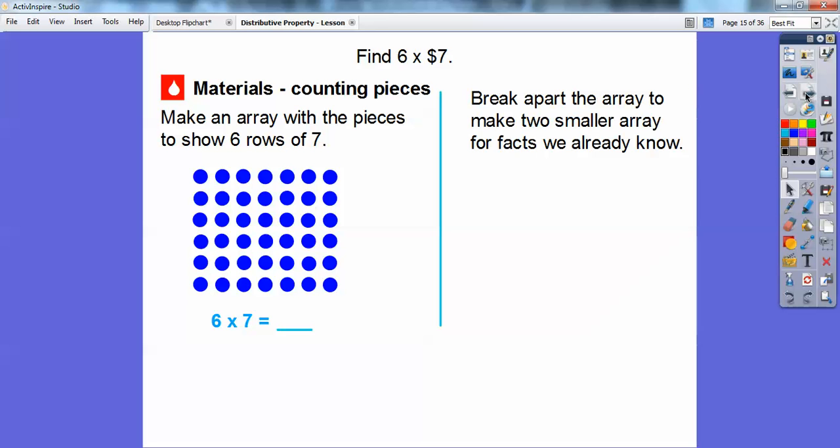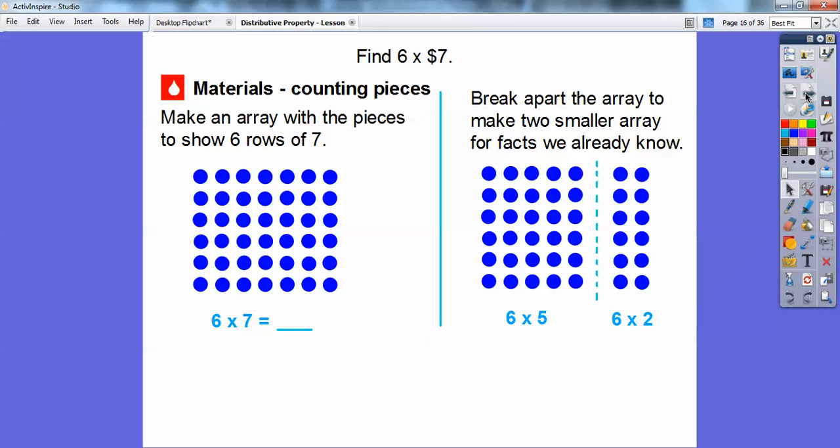We're going to break apart this array, this 6 by 7 array, and make two smaller arrays for facts that we already know. We're going to break it into six rows of five here and then six rows of two here. Six times five is an easy one. You can count by fives: 5, 10, 15, 20, 25, 30. So 6 times 5 would be 30.